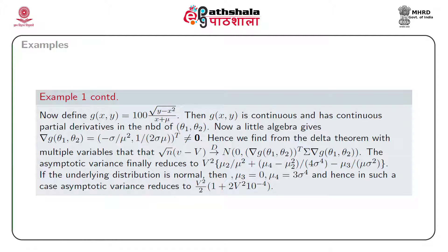After a little algebra the asymptotic variance is expressed as capital V squared multiplied by (mu_2/mu^2 + (mu_4 - mu_2^2)/(4*sigma^4) - mu_3/(mu*sigma^2)). When the underlying distribution is normal, since it is symmetric, mu_3 equals 0, and using results on even order moments, mu_4 equals 3*sigma^4. Hence the asymptotic variance reduces to V^2/2 * (1 + 2V^2/10^4).